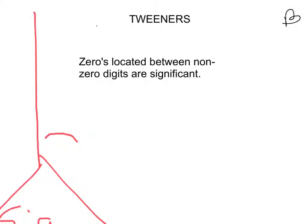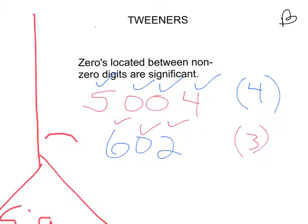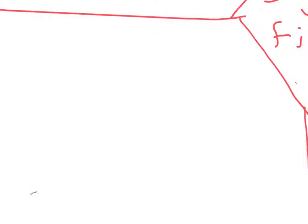Examples could be, let me put some things down here. Say 5004. You clearly have two zeros that are between non-zero digits. Consequently, in this particular numerical value, there are four significant figures. Let's do something as simple as this. Say 602. Then here, this is significant because of the tweener rule, and then we will have the non-zero digits being significant. So consequently, there are three significant figures in that value. So we've got A and B done.